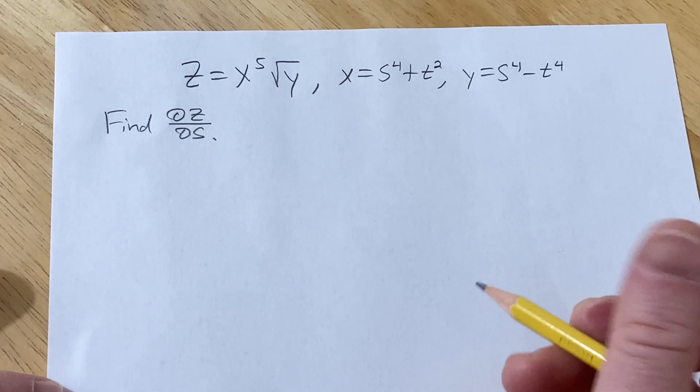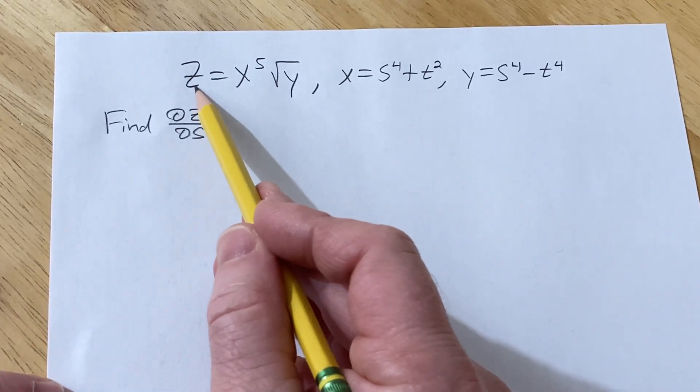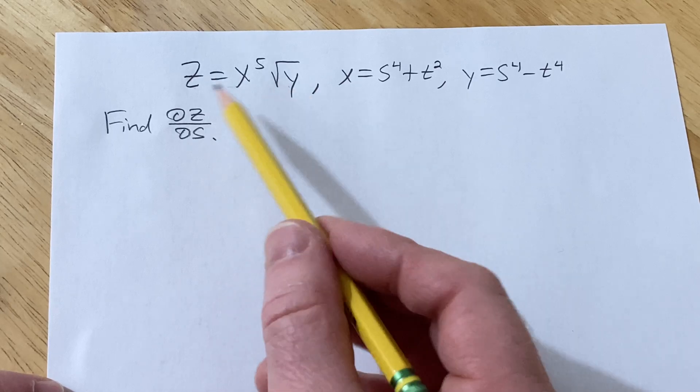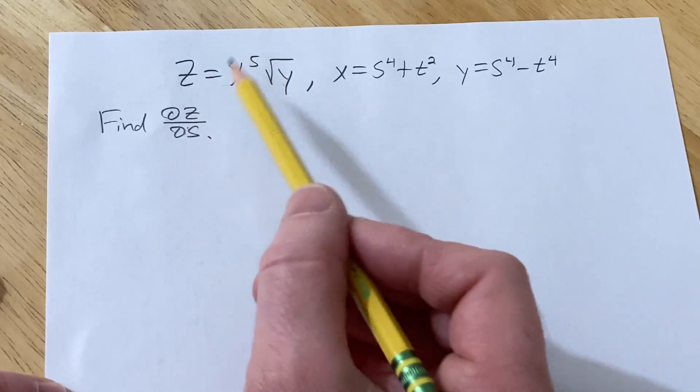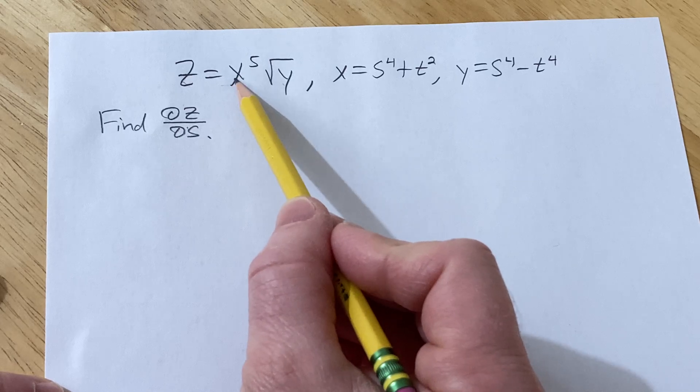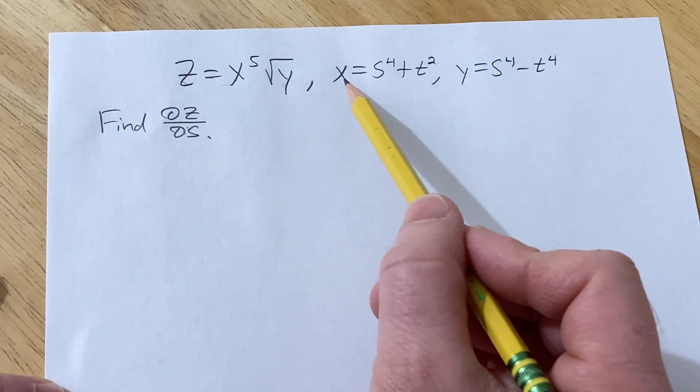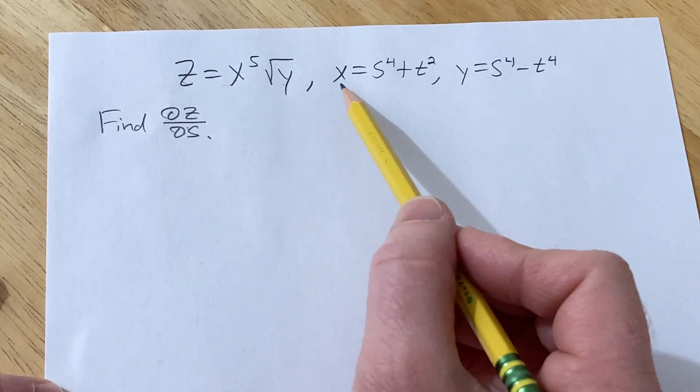Alright, let's do some mathematics. Let's go ahead and find the partial derivative of this multi-variable function with respect to s. So z is equal to x to the fifth times the square root of y, and then x and y are defined by these equations.